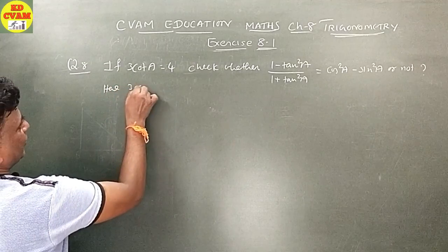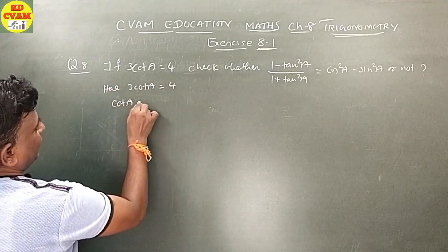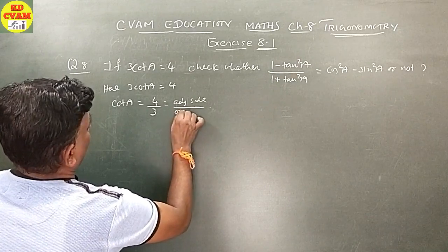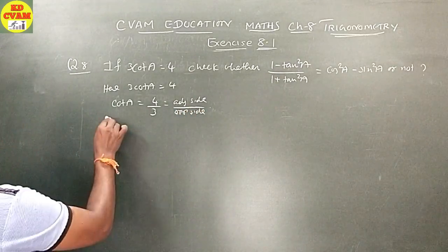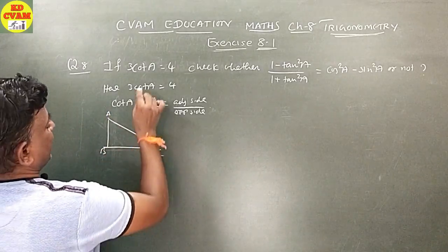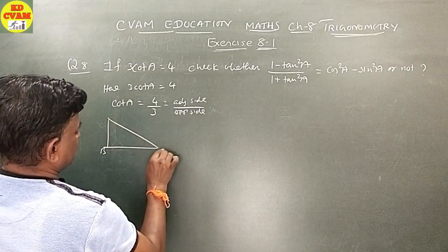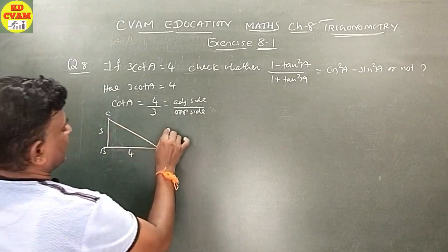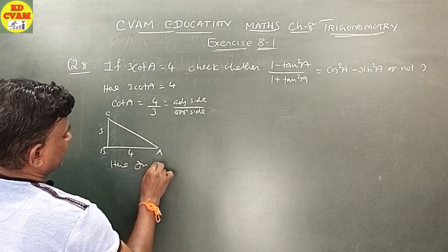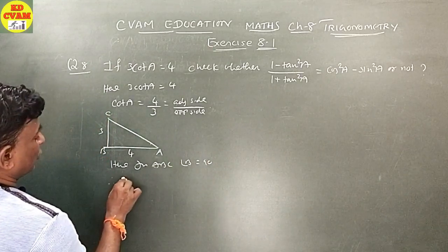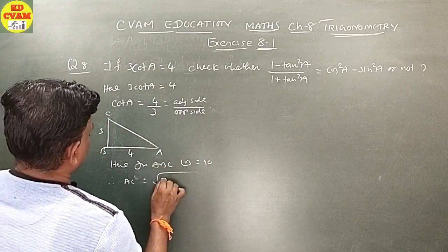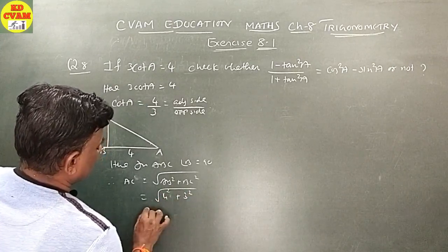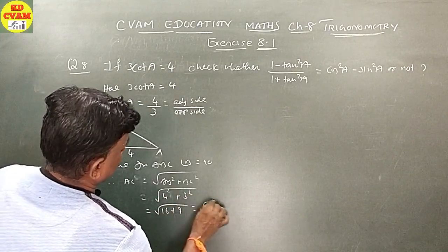3 cot A equals 4, so cot A equals 4 upon 3. Cot A equals adjacent side upon opposite side. Taking triangle ABC with angle B equal to 90 and angle A at our vertex. Adjacent side is 4 and opposite side is 3.